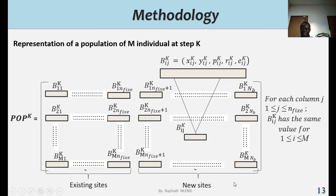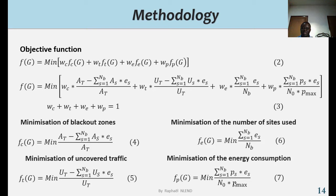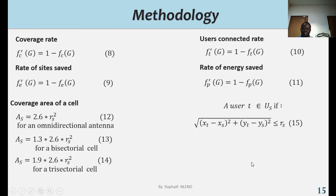Here we have the objective function as we defined above. This objective function is a minimization of a weighted sum of blackout zones, uncovered traffic, number of sites used, and energy consumption. We have here the formula of coverage rate, rate of site saved, user connected rate, rate of energy saved, as well as coverage area of the cell.